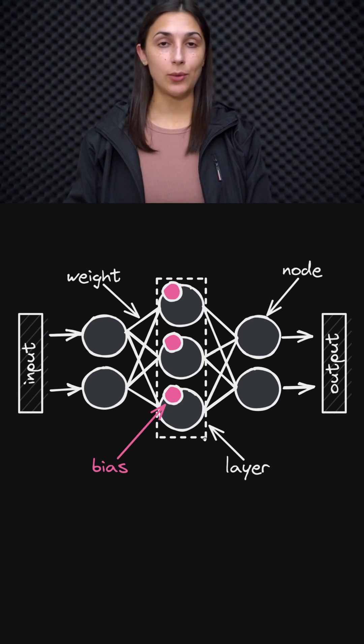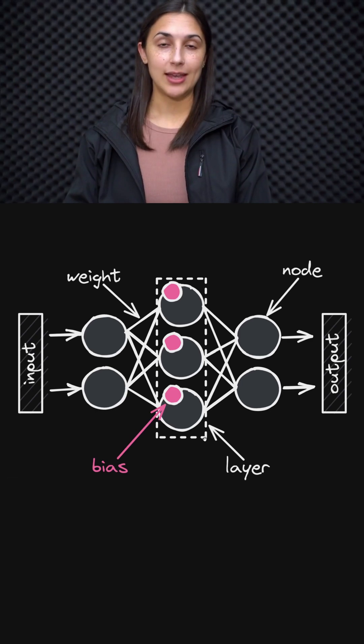When we build a neural network, we can decide whether or not we want to include these bias nodes. Even though we have the choice, it is the norm to do so.